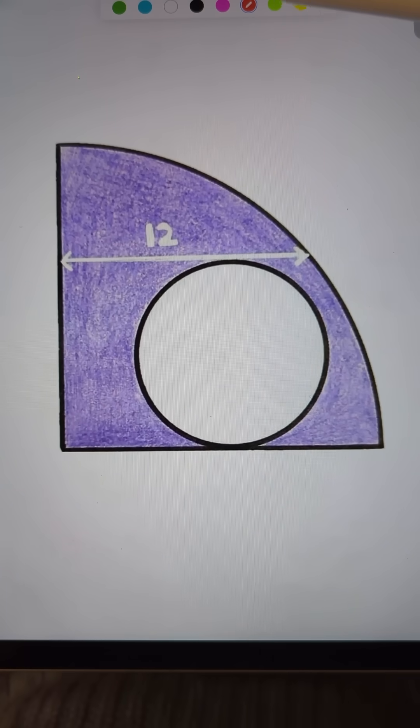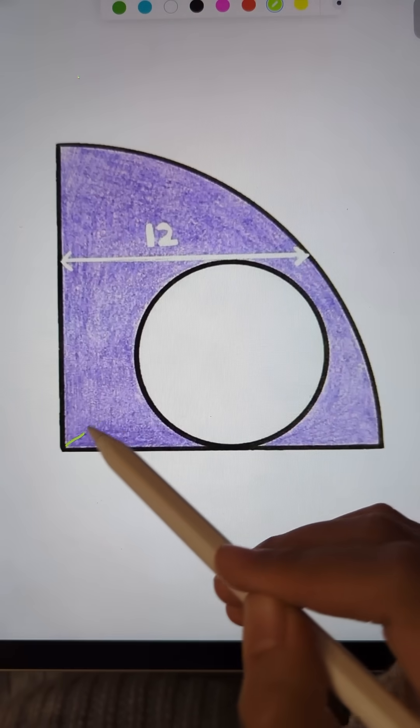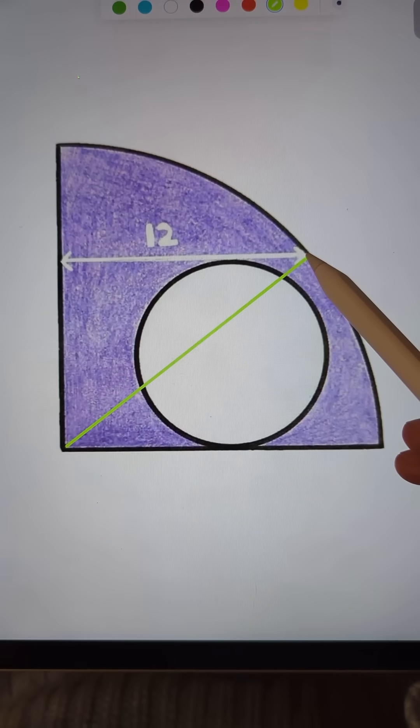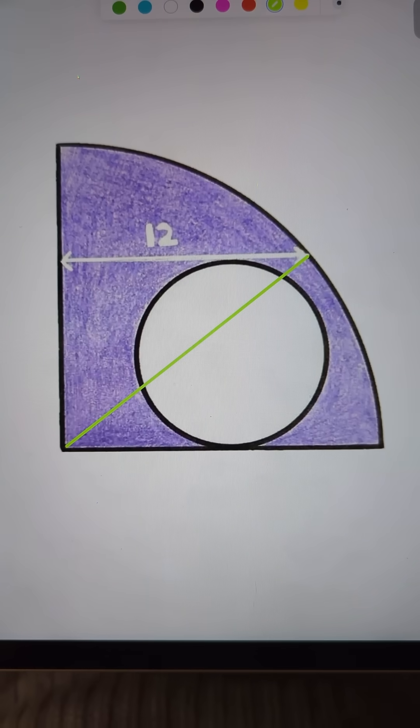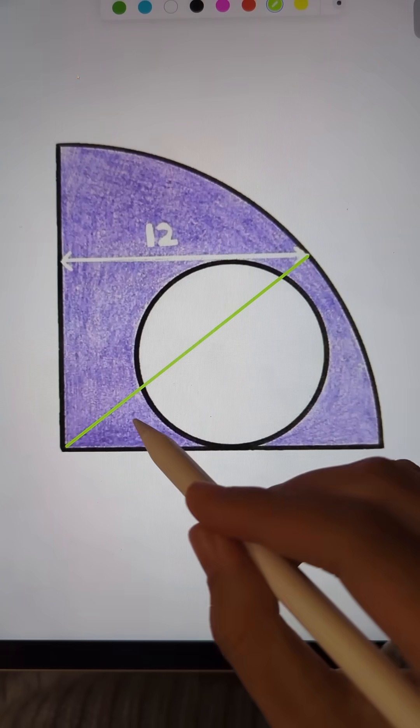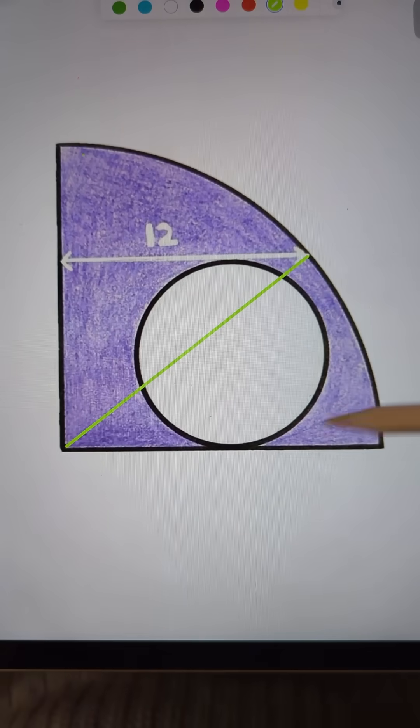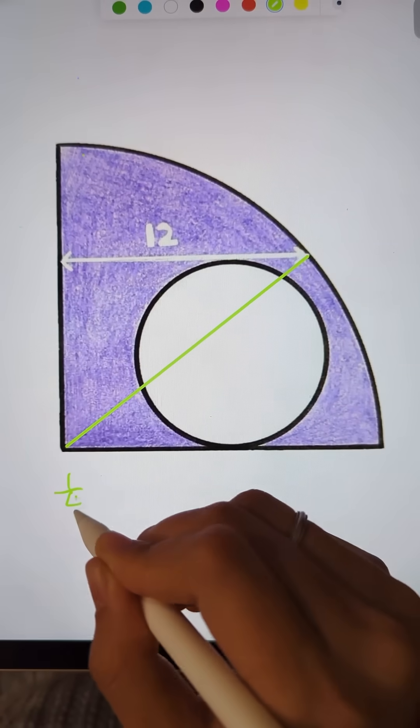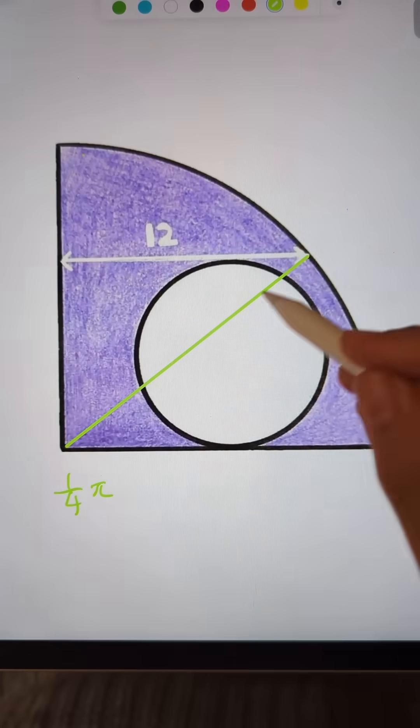All right, let's first see: what's this purple area? What is the area of the bigger quarter disc? Which is one over four pi. Let's say this disc has radius a.